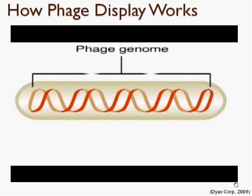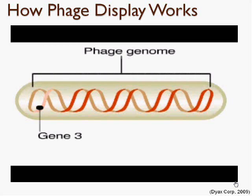Specifically, the bacteria uses gene 3 on the phage to produce a protein which assembles on one end of the phage. Hence, by inserting a variety of zinc finger proteins into gene 3 of the phage, a library of phages each expressing a different zinc finger protein can be produced.